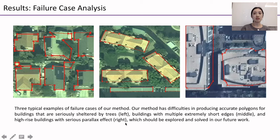We further show some typical failure cases of our method. Our method has difficulties in producing accurate polygons for buildings seriously sheltered by trees, buildings with multiple extremely short edges, and high-rise buildings with serious parallax effect. These issues should be explored and solved in our future work.